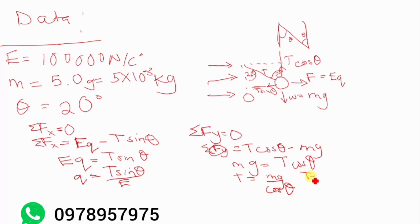Then now T is going to be equal to, what's M? M is 5 times 10 to the power negative 3 times 9.81, which is our gravity over cosine 20. So now we can punch that in the calculator.